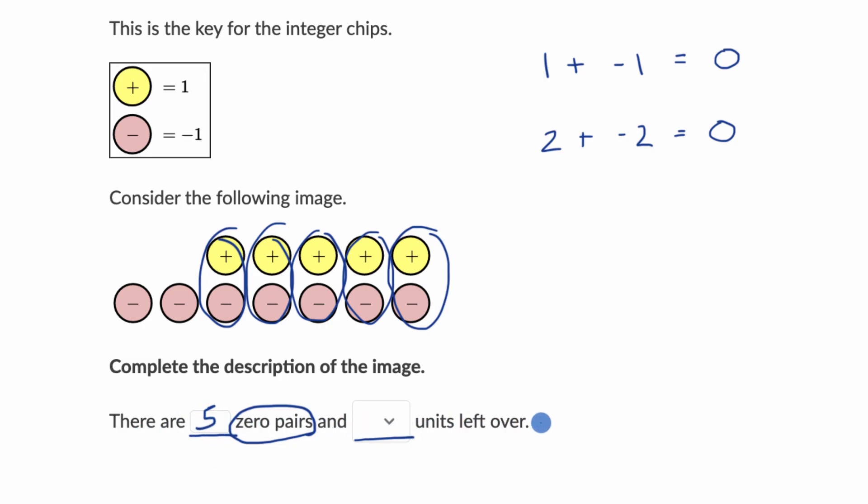And then how many units are left over? Well, you could see right over here, we see that we have two of the negative one units left over.